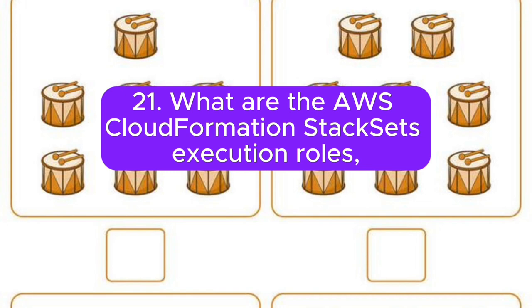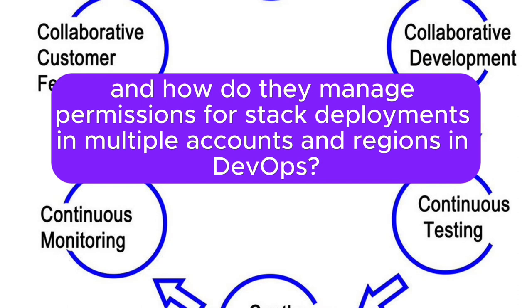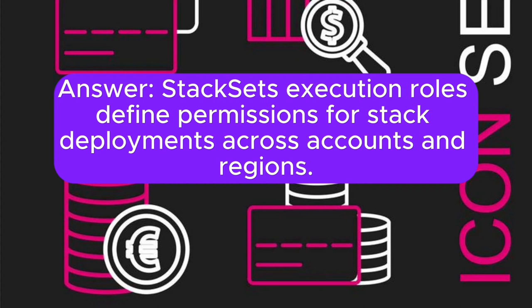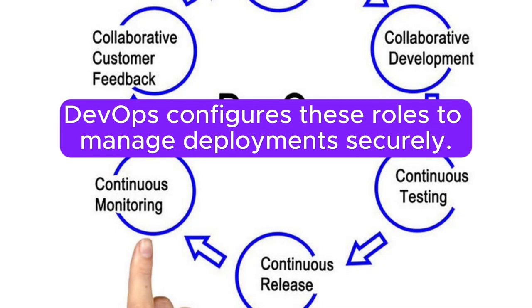Question 21: What are the AWS CloudFormation StackSets execution roles, and how do they manage permissions for stack deployments in multiple accounts and regions in DevOps? Answer: StackSets execution roles define permissions for stack deployments across accounts and regions. DevOps configures these roles to manage deployments securely.